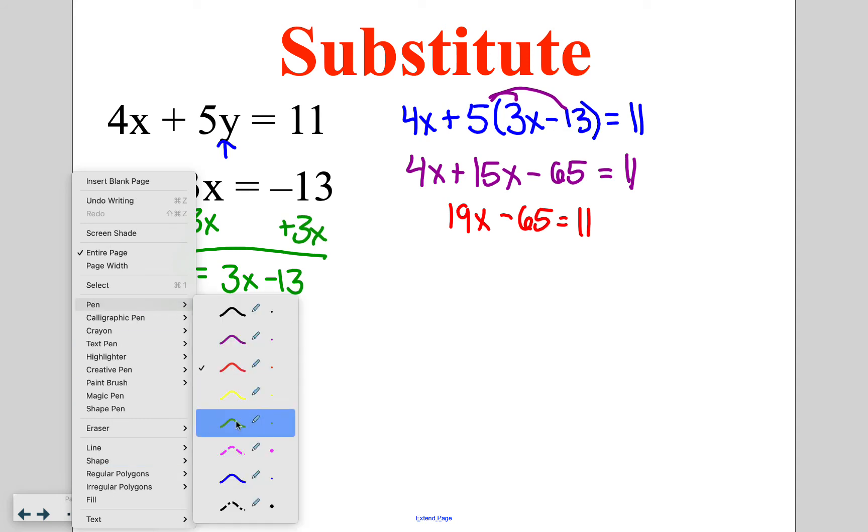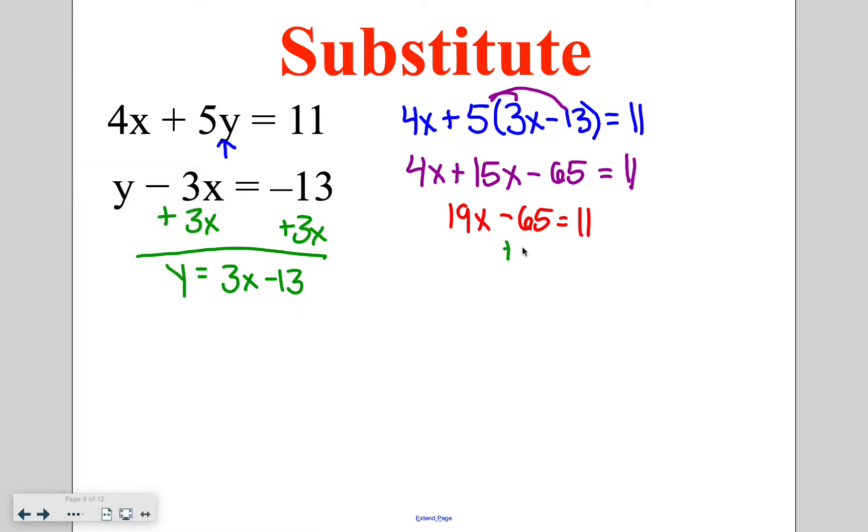Then I'm going to add 65 to both sides of my equation, giving me 19x is equal to 76. And when you divide both sides by 19, you are going to get an answer for x of 4. So x in this problem is going to equal 4.